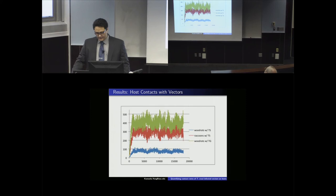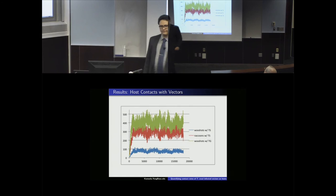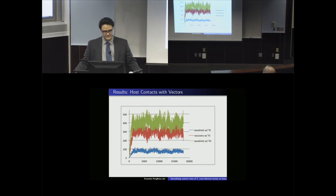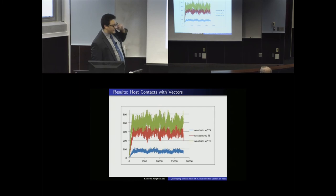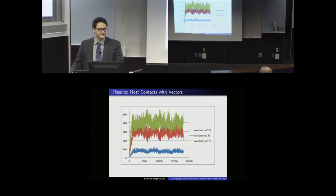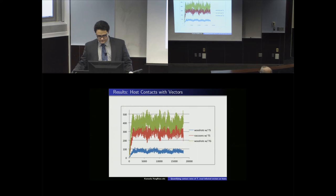The green line shows the number of contacts wood rats have with T. steckeri; the blue line shows contacts wood rats have with T. sanguasuga. The x-axis is time — the simulation runs for about 20,000 days — and the y-axis is the number of contacts measured at each time step, i.e., how many times a vector and a host are co-located at each time step.